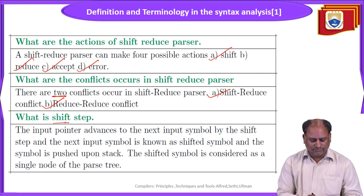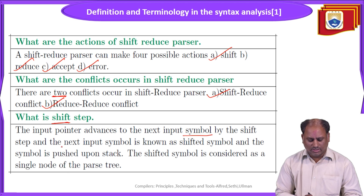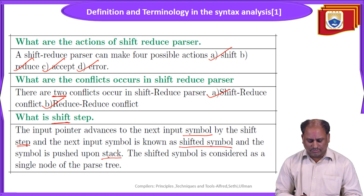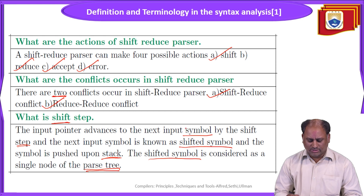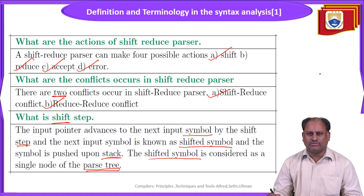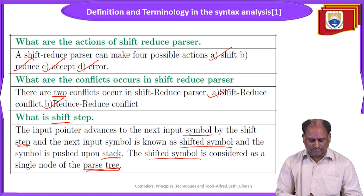In a shift-reduce parser, during a shift action the input pointer advances to the next input symbol, the next input symbol is known as the shifted symbol, and that symbol is pushed onto the stack. The shifted symbol is considered as a single node of the parse tree. Each time a symbol is processed, one symbol is placed on the stack; after that, when an operator is encountered, the two operands are popped with the corresponding symbol and the operation is performed, reducing the expression.